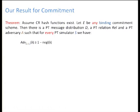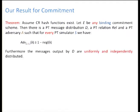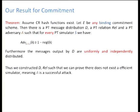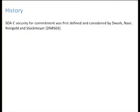Our result basically assumes the existence of a collision-resistant hash function, and we take any hide-and-bind commitment scheme and show that there are some message distribution D, some relation, and some adversary such that all simulators will yield a high selective open advantage. We should also stress that the messages we consider are independently and uniformly distributed. Thus we are presenting an attack against the selective open security. We should also highlight that we do not assume that the simulation is black-box.